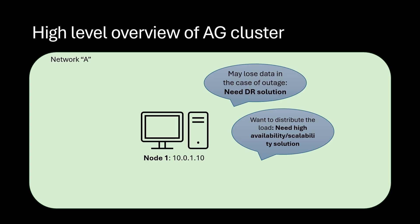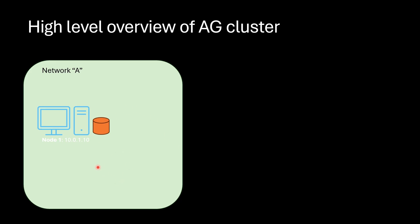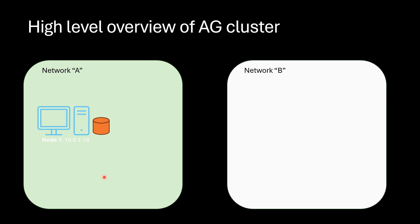First, along with current network A, we create network B where we create another node with separate database. Also, we create another node in network A.